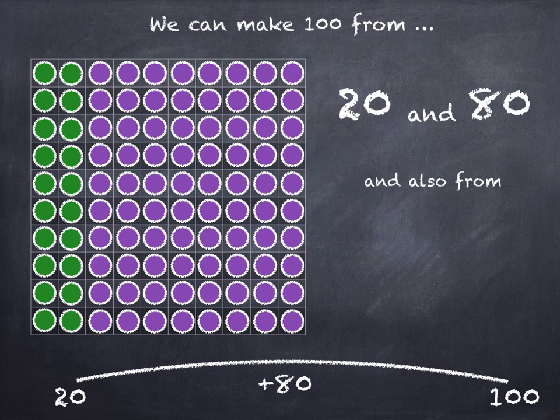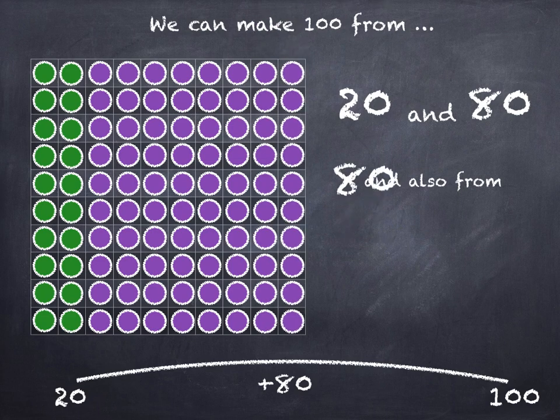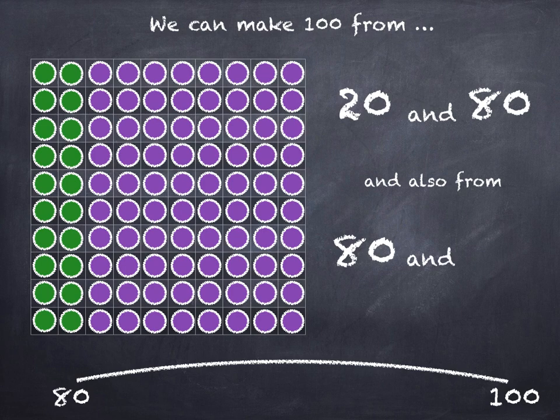And we can also make 100 from 80 and 20. 80 plus 20 is 100.